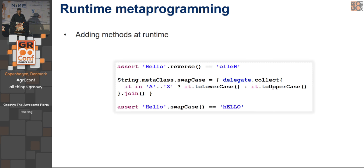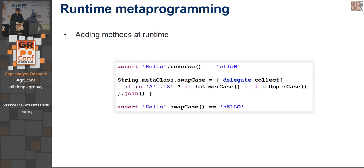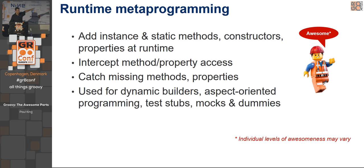Next pillar: metaprogramming. The 'reverse' method is one that Groovy automatically adds for you on Strings. If you go look at java.lang.String, there's no reverse method — Groovy adds that for you using runtime metaprogramming. The String class itself we've got no control over, but the runtime metaprogramming system knows when you're doing operations on strings and supplies an extra method. You can also do it yourself — here we're going to add a swapCase method to the String class, and we can then call swapCase on a String. That's runtime metaprogramming.